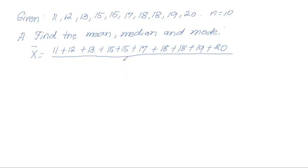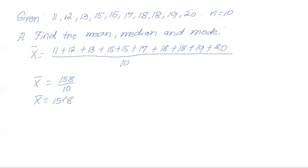So we divide the sum by 10. The sum of the observations, if you use a calculator, is 158. So 158 divided by 10 gives you 15.8. The data set has a mean of 15.8.